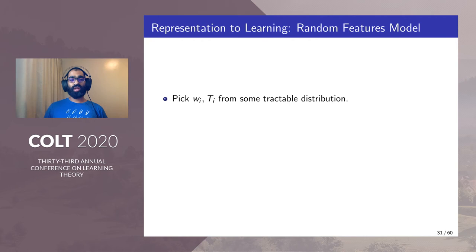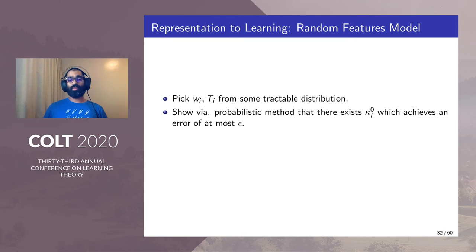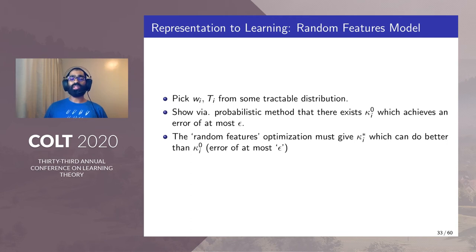We pick w_i and t_i from some tractable distribution and show via probabilistic method that there exists a κ_i^0 which achieves an error of utmost ε. The random features optimization must give κ_i* which can do at least as well as κ_i^0, that is achieve an error of utmost ε.